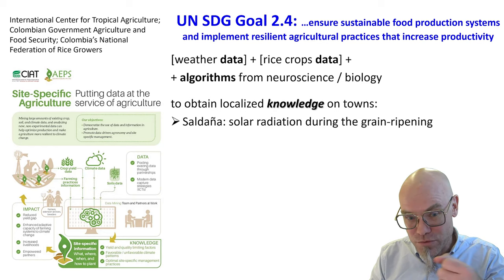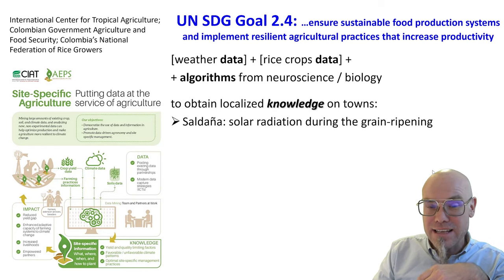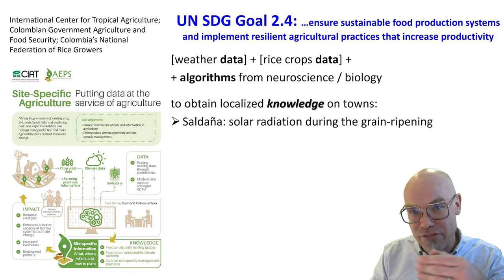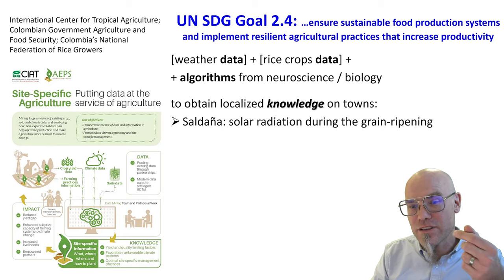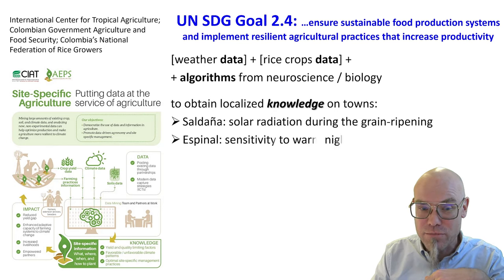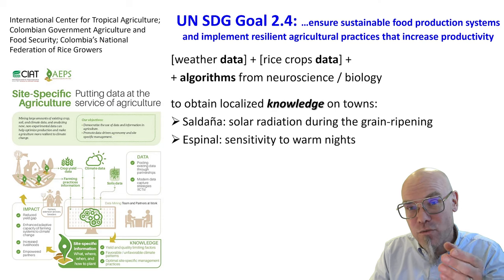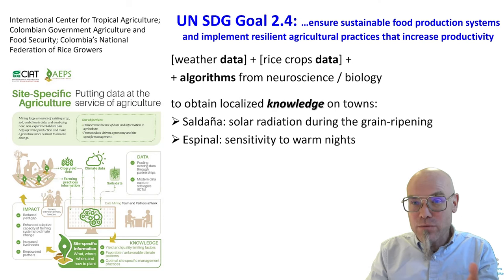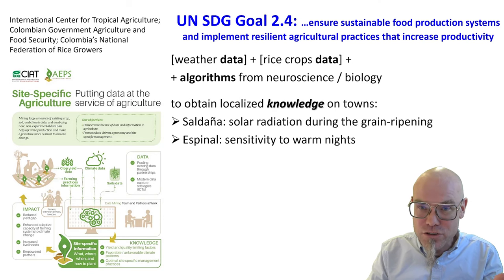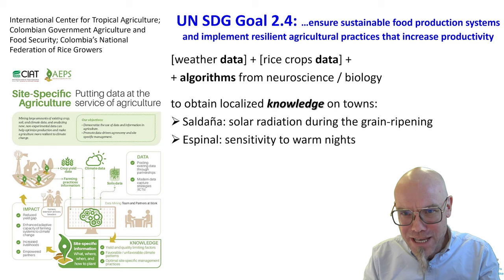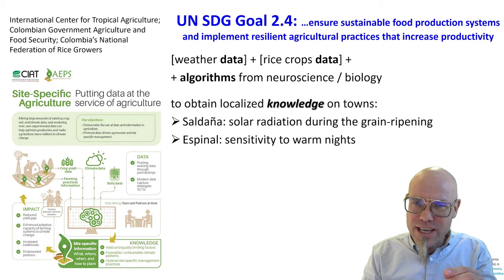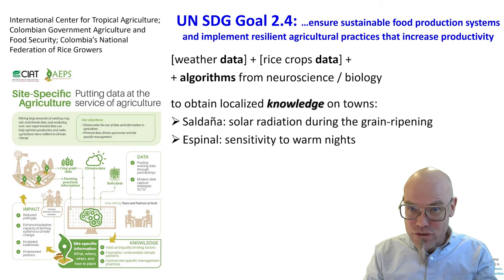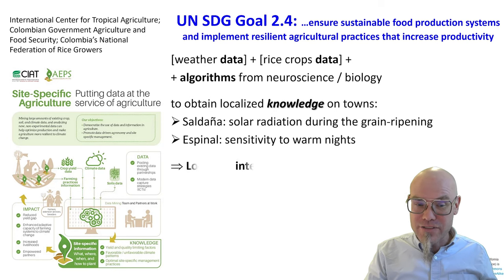For example, in one town called Saldana, they found that solar radiation during the grain ripening phase is very important. In another location, they found sensitivity to warm nights. Basically, they found ways in different locations to increase the rice crops harvest.